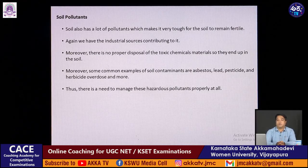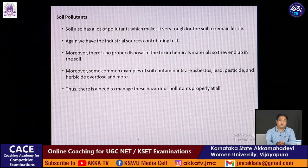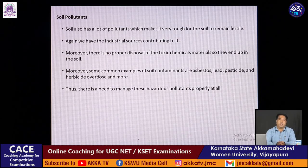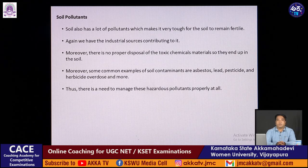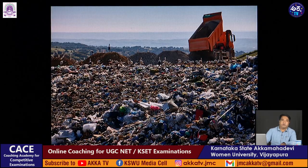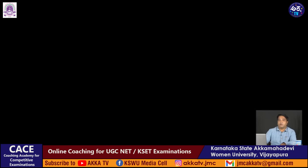Soil also has many pollutants which make it very tough for the soil to remain fertile, and fertile soil is essential for plant growth. Industrial sources contribute to soil pollution, and improper disposal of toxic chemical materials means they end up in the soil. Common examples of soil contaminants include asbestos, lead, pesticides, and herbicides that can be overdosed in humans through repeated consumption of plants grown in contaminated soil. There is an immediate need to manage hazardous pollutants. Images show large dumping of human waste, industrial waste, and agricultural waste that eventually affects soil quality.